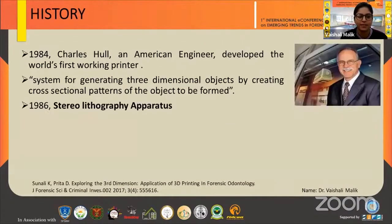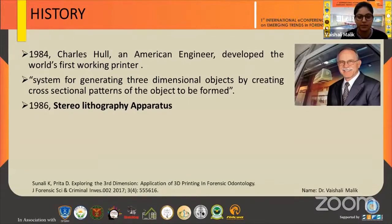The history of 3D printing dates back to 1984. Charles Hull, an American engineer, developed the world's first working printer and defined it as a system for generating three-dimensional objects by creating a cross-sectional pattern of the object to be formed. In 1986, he developed a commercially available printer machine named the stereolithography apparatus.